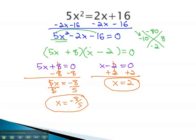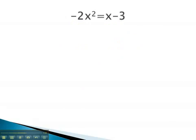Let's try one more example, where we have to make it equal zero first before we can factor and set each factor equal to zero. In this problem, we notice the x squared is negative. We like it to be positive, so we're gonna move it over to the other side.